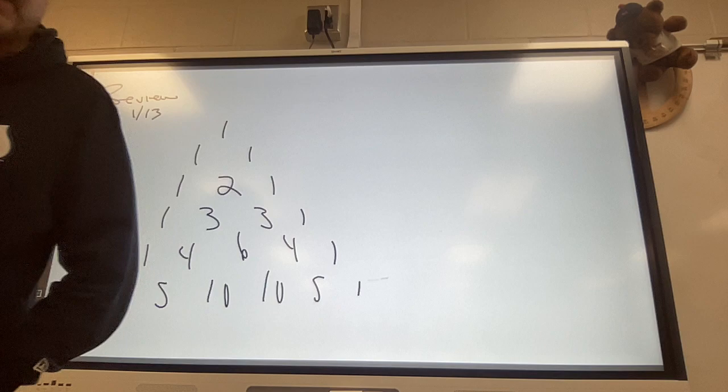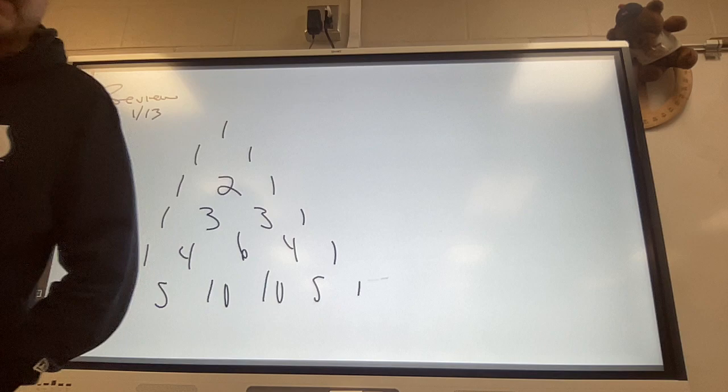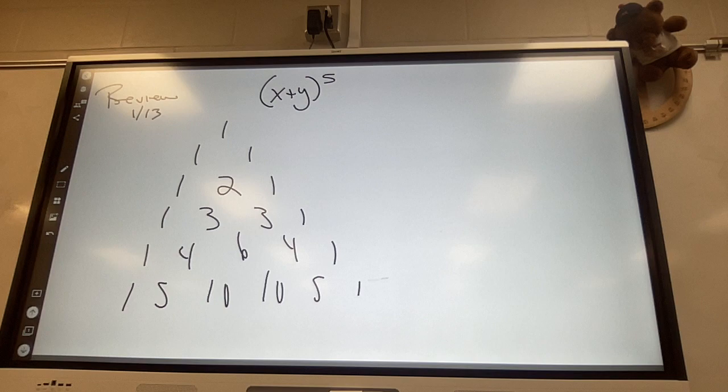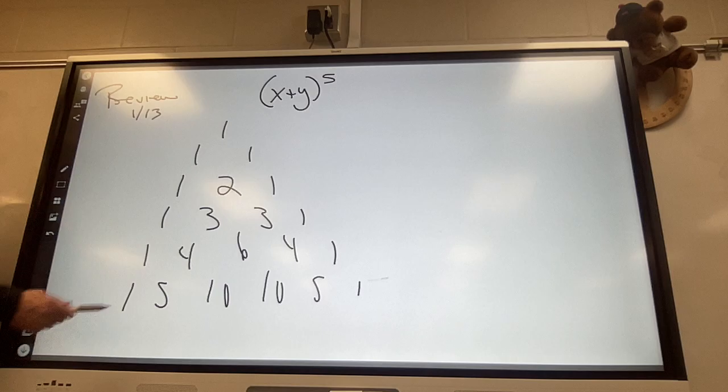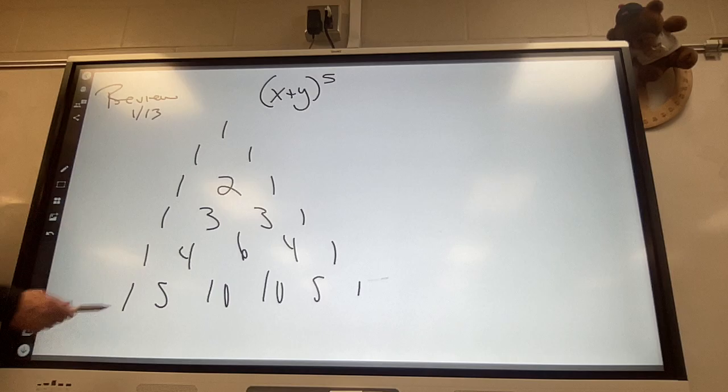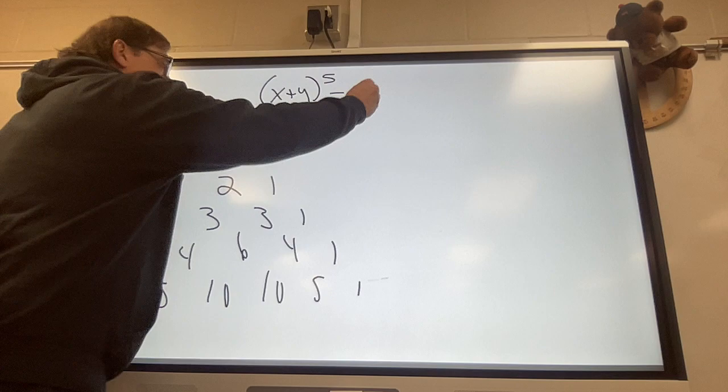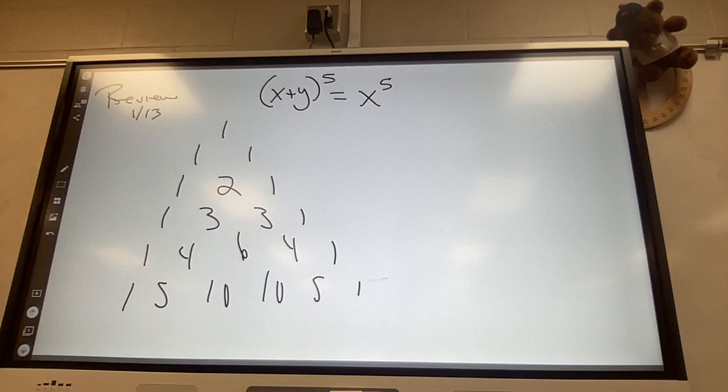The next one says use Pascal's triangle to go x plus y to the sixth. I'm going to do a different one. I'm going to do x plus y to the fifth power. Mentioned this yesterday. Am I actually recording? I am. And it's this. This is the fifth row. Row zero, one, two, three, four, five. You can tell what row it is by just the number of stairs at you. There's row five.